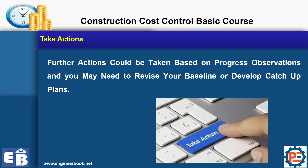The reports can give you signs to take some actions. Further actions could be taken based on progress observations, and you may need to revise your baseline or develop a catch-up plan. For example, if you find one activity is above budget and you need to finish it within budget, you can meet with your project team and agree to increase productivity somehow, or find a way to reduce material wastage — and this can be done before the project is completed and before you exceed your budget.